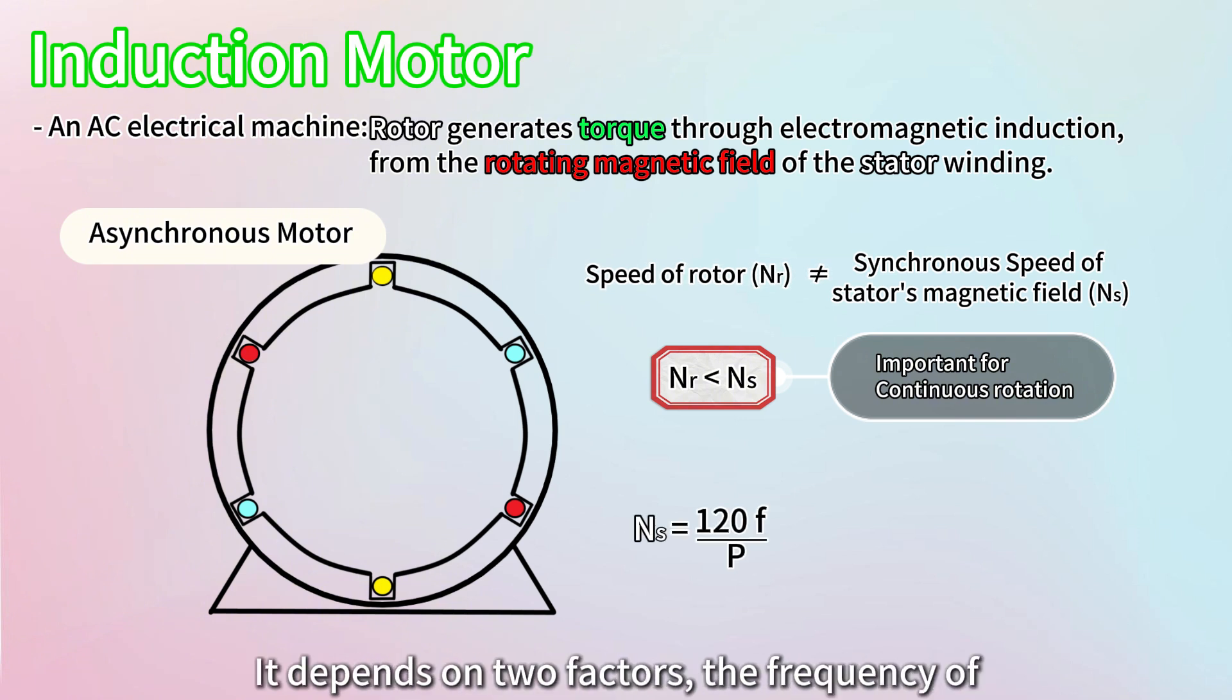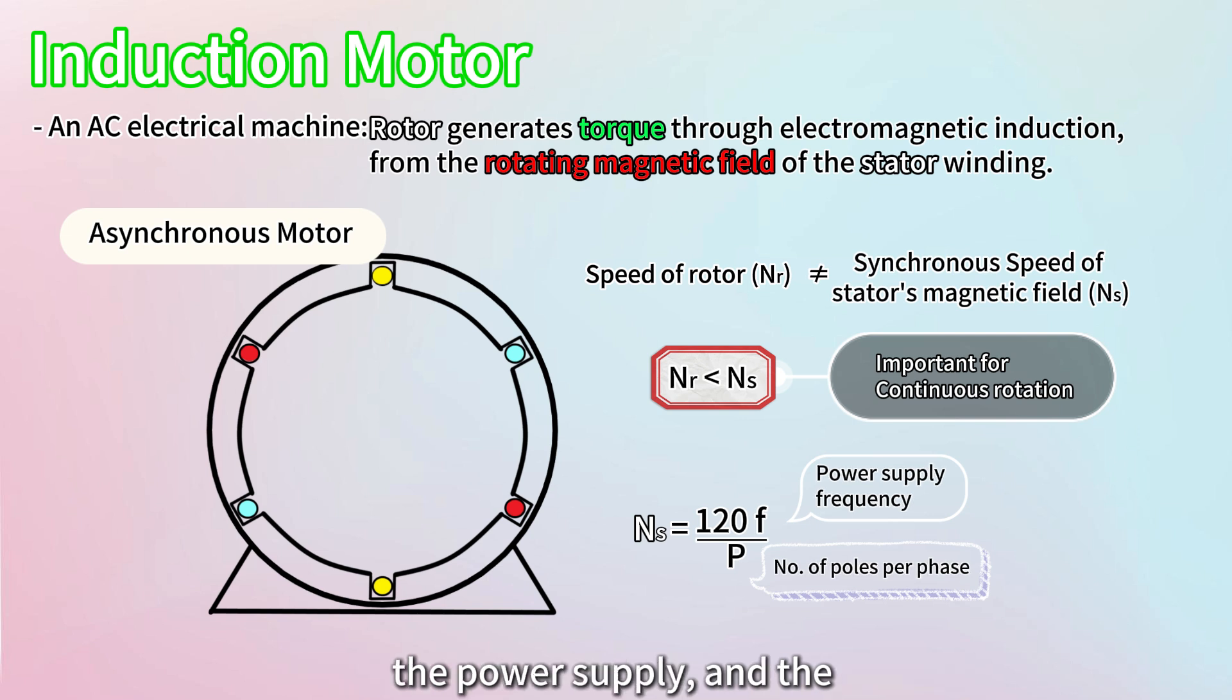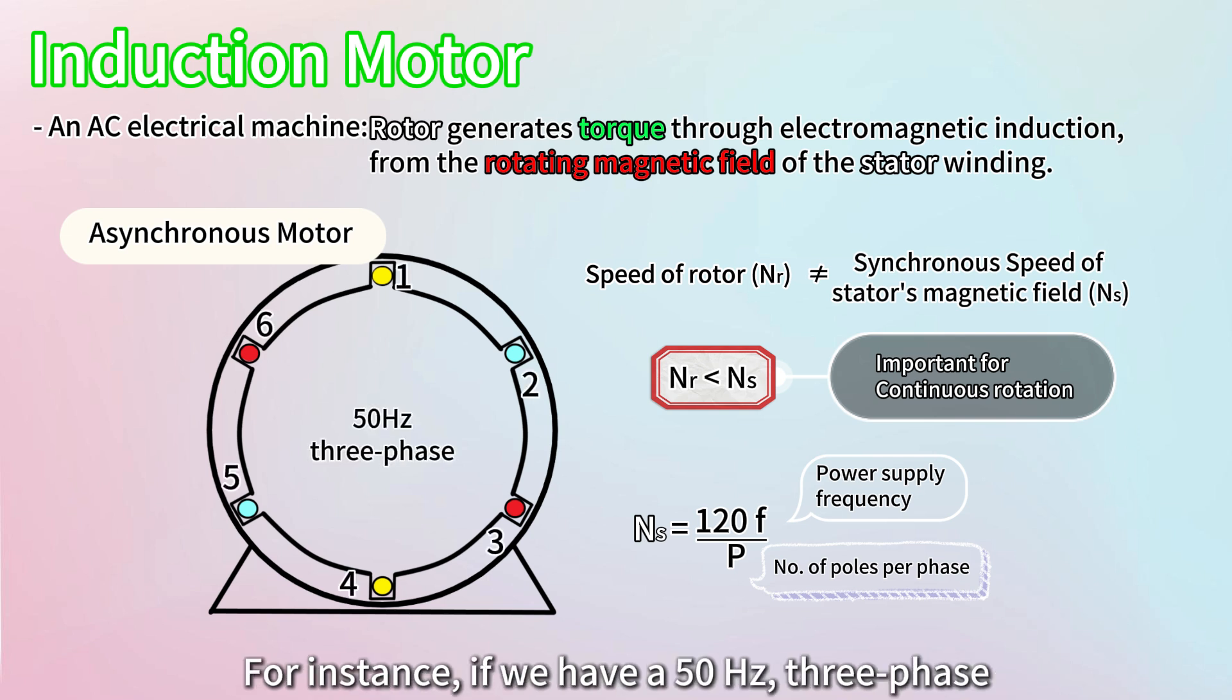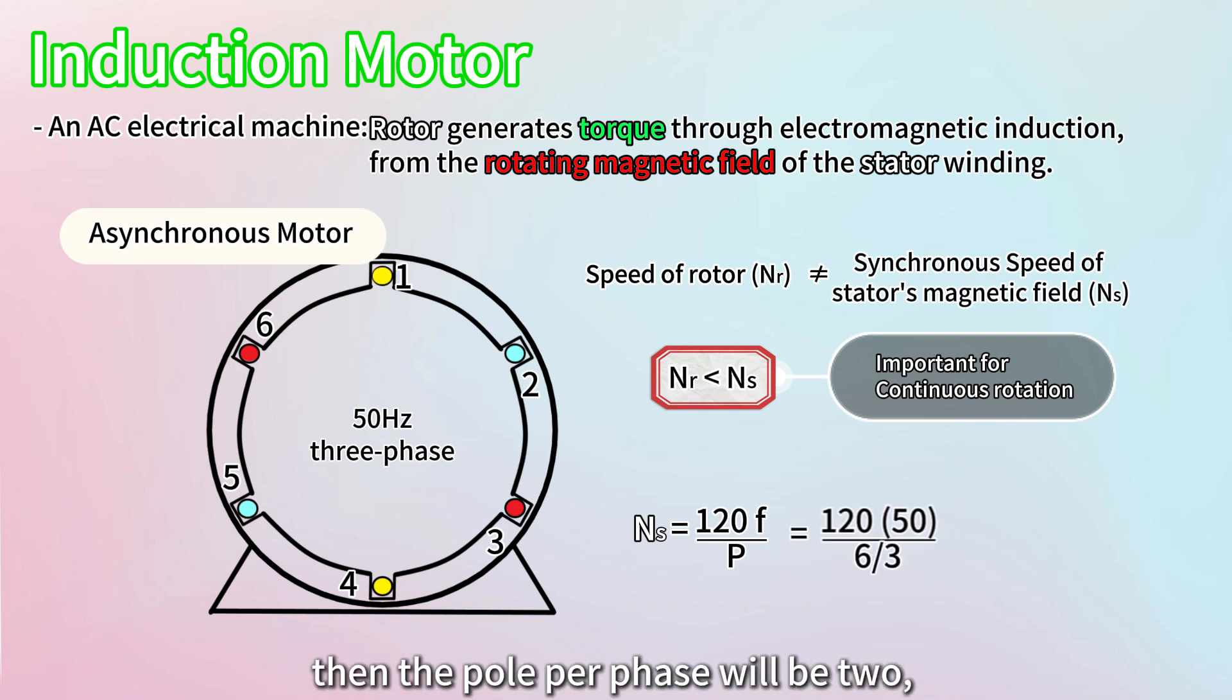It depends on two factors, the frequency of the power supply, and the number of poles per phase in the stator winding. For instance, if we have a 50 Hz three-phase induction motor stator with six poles in total, then the pole per phase will be two, and the synchronous speed can be calculated as 3000 rpm.